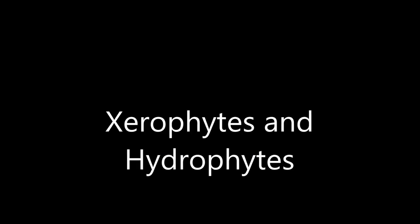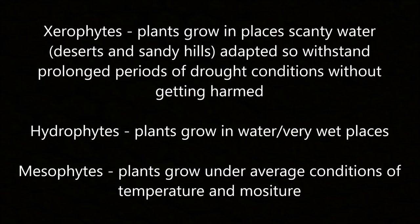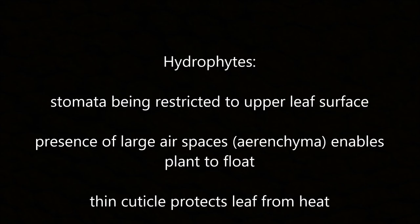Xerophytes are plants that grow in places with scarce water such as deserts and sandy hills, and are adapted to withstand prolonged drought without harm. Hydrophytes grow in water or very wet places; mesophytes grow under average conditions of temperature and moisture. Hydrophytes have stomata restricted to the upper leaf surface and large air spaces called aerenchyma enabling the plant to float. The thin cuticle protects the leaf from heat.